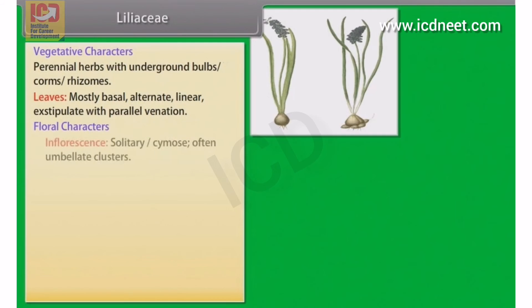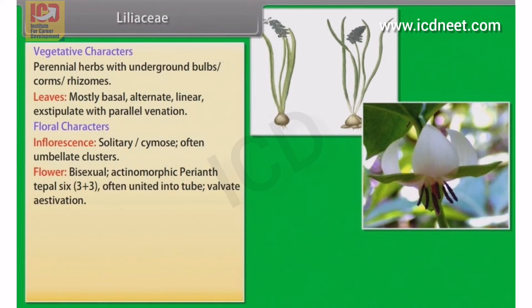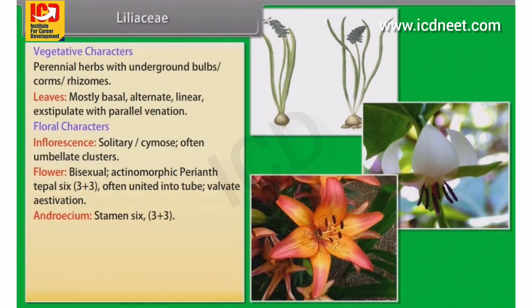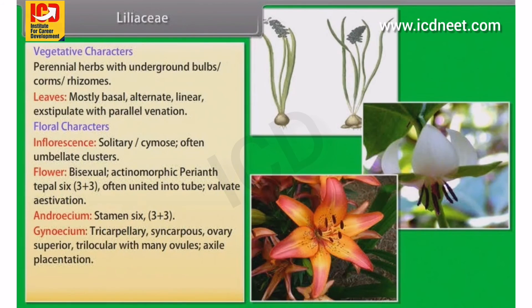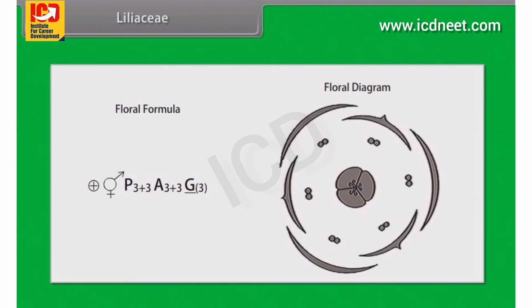Floral characters of Liliaceae: Inflorescence is solitary, cymose, often umbellate clusters. Flowers are bisexual and actinomorphic. Perianth has 6 tepals (3+3), often united, with valvate aestivation. Androecium has 6 stamens (3+3). Gynoecium is tricarpellary, syncarpous; ovary superior, trilocular with many ovules and axile placentation. Fruit is a capsule, rarely a berry. Seeds are endospermous.